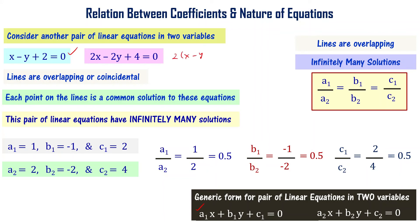The second equation (2x - 2y + 4 = 0) is 2 times the first equation (x - y + 2 = 0), so they are the same. Multiplying the second equation by 0.5 gives the first equation. One equation is dependent on the other, which is why they are called a dependent set of linear equations.